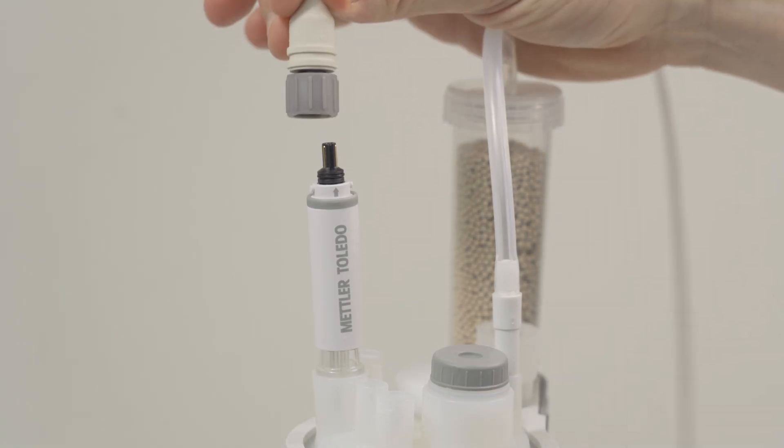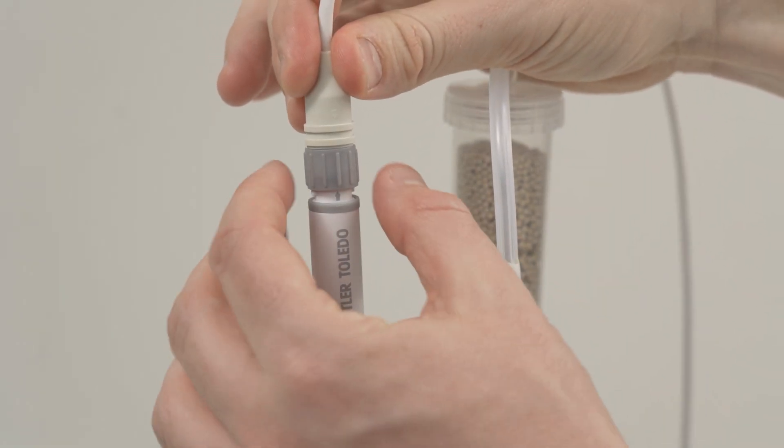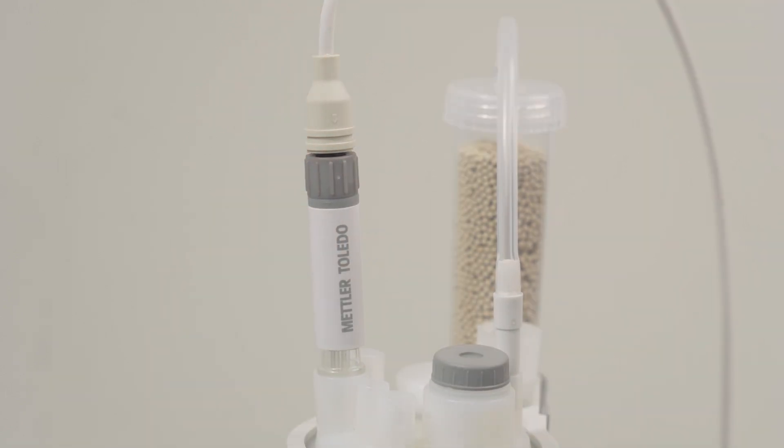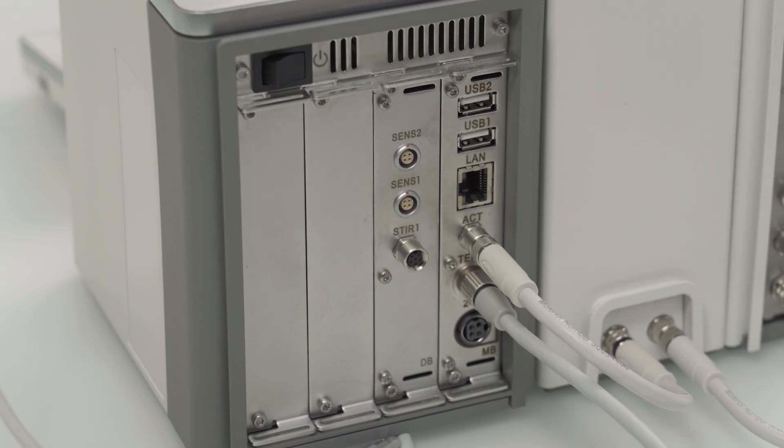Take the sensor cable. Check if the arrow on the white part of the cable and the grey arrow on the sensor are aligned. Push it in and fix it by turning the grey nut clockwise.